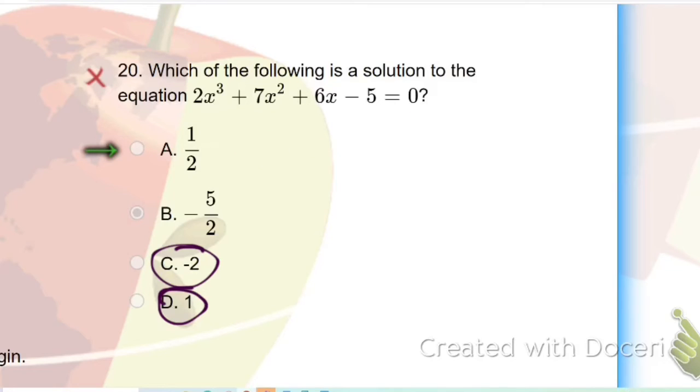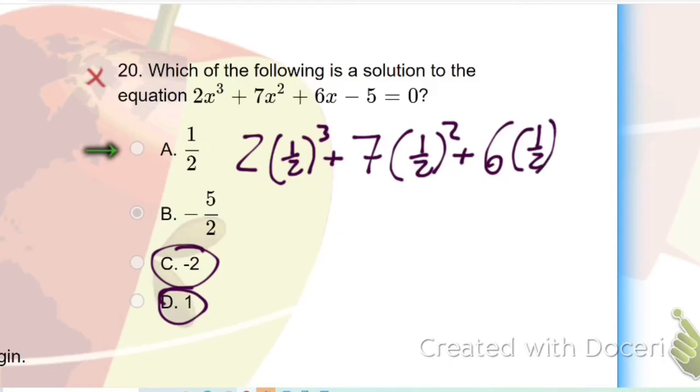So let's try the 1/2, 2 times (1/2)³. And you got to actually work this out, but this is better than doing some fancy factoring. 6 times 1/2 minus 5. Now 6 times 1/2, I already know that one. 6 times 1/2 is 3. 1/2 of 6 is 3.